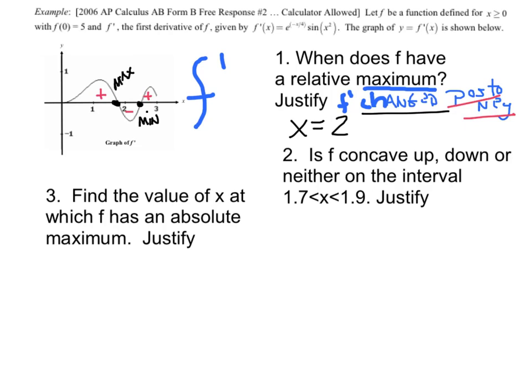Question 2: Is f concave up, down, or neither on the interval 1.7 to 1.9? Let's talk about our justification. Who are we talking about when we see concavity? We're talking about f double prime. We want to zone in on the section 1.7 to 1.9.